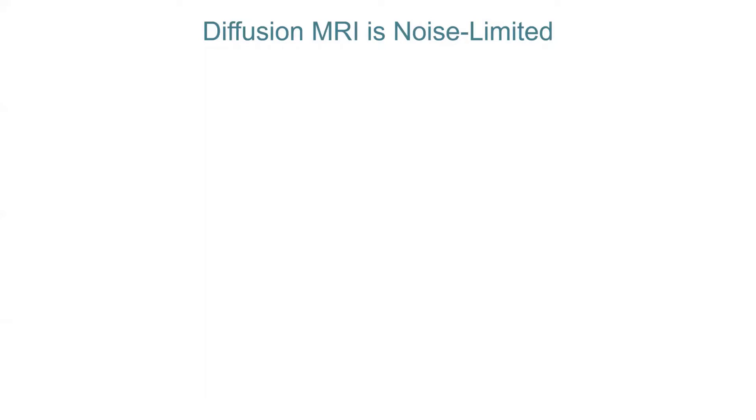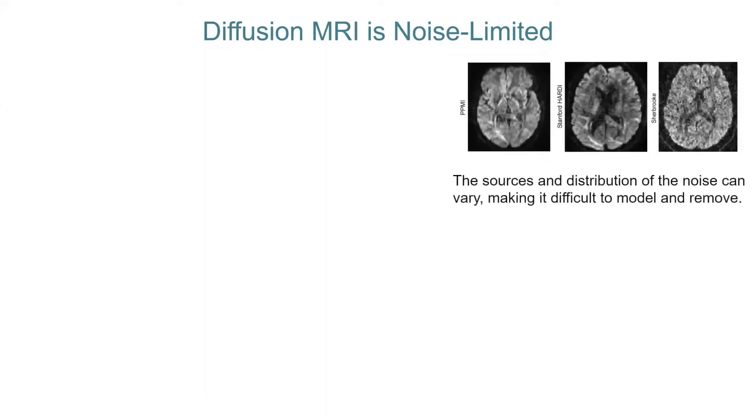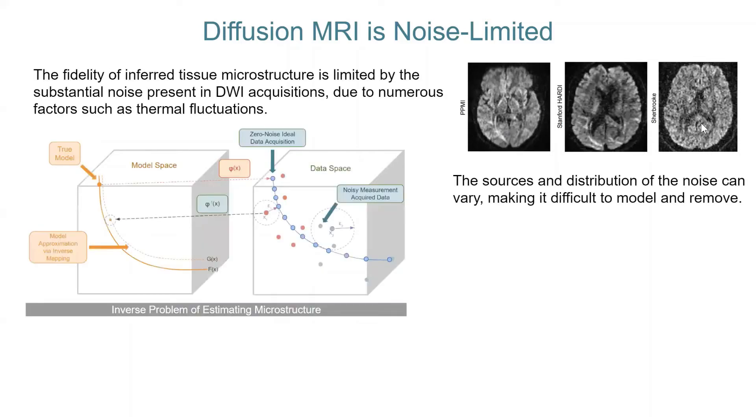So basically, diffusion MRI is limited in SNR, as I explained before. The sources of noise vary, it depends on the type of acquisition that you have. Here I'm showing a single shell acquisition that's a PPMI standard DTI protocol. Here's a HARDI protocol, and here's a multi-shell more HCP style acquisition. And what happens is when your data is inherently noisy, no matter what model you fit to the data, it is going to be pushed away from reality.